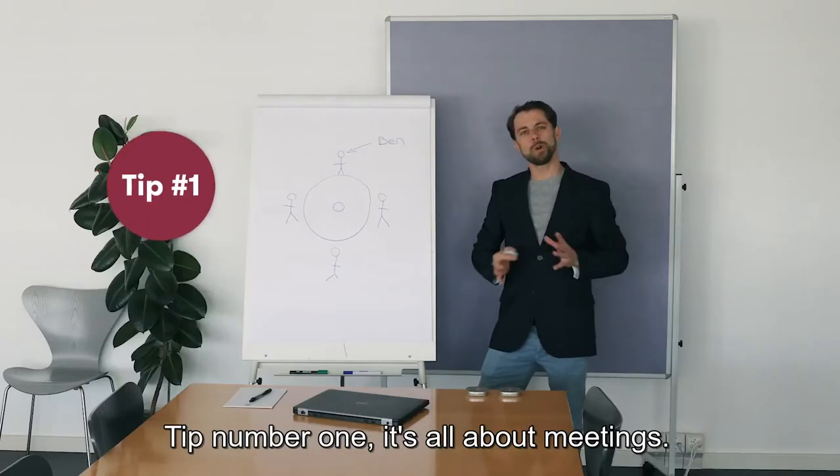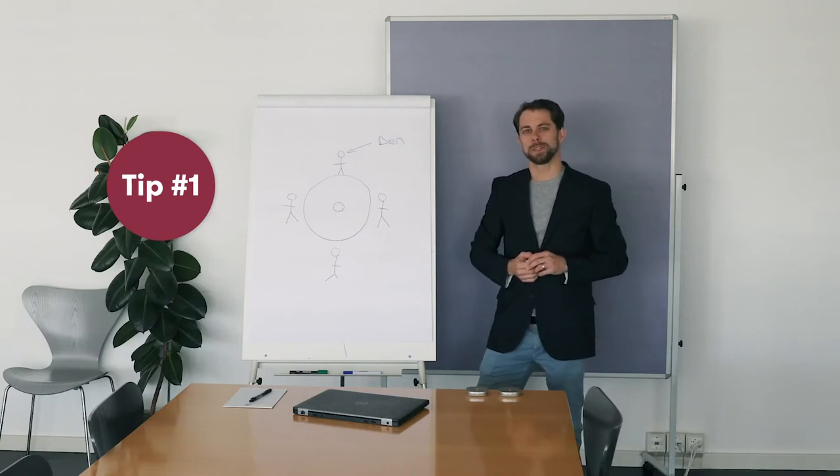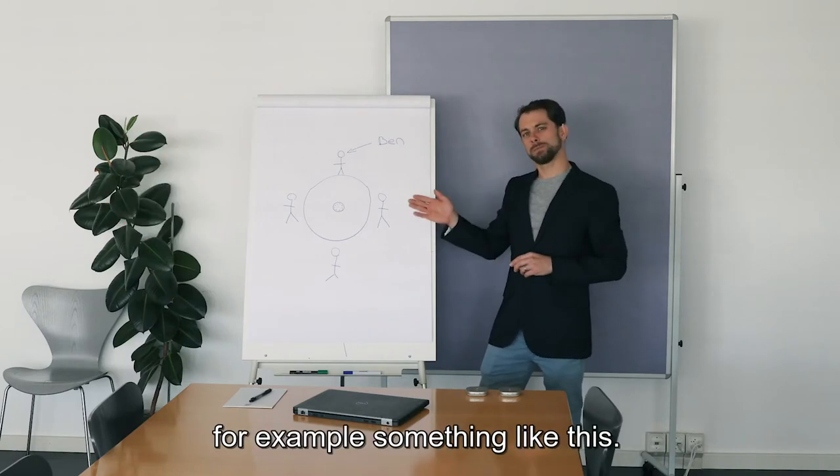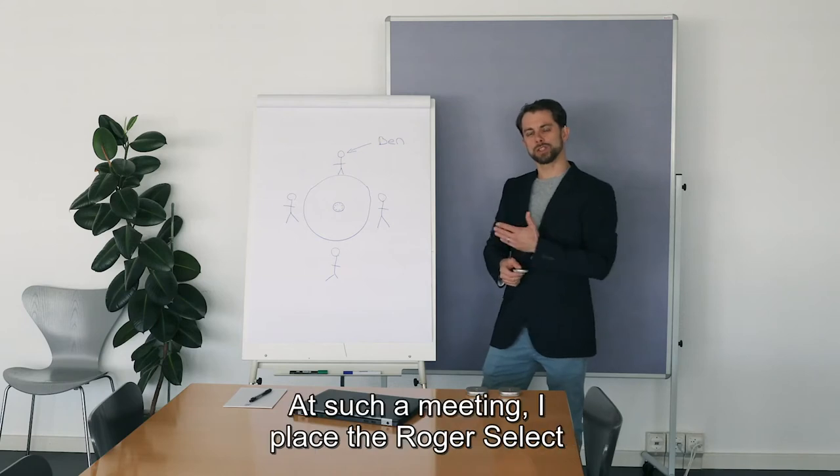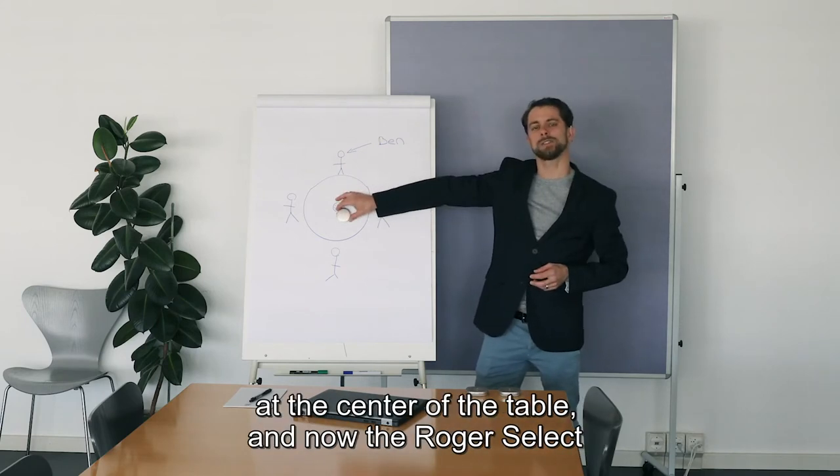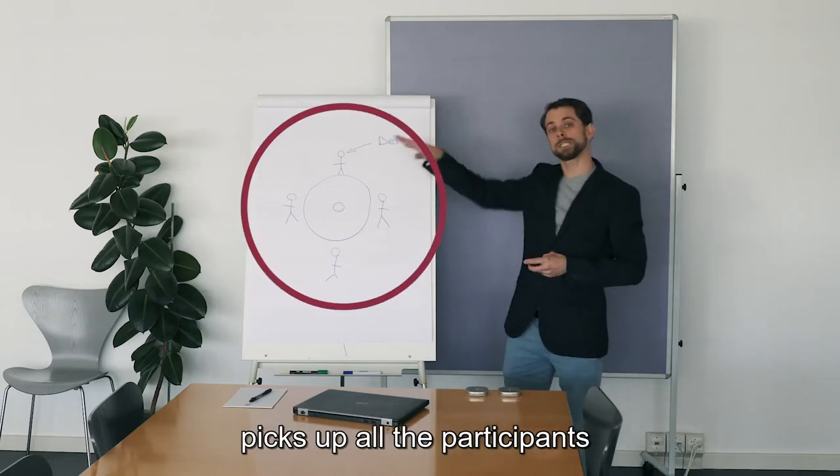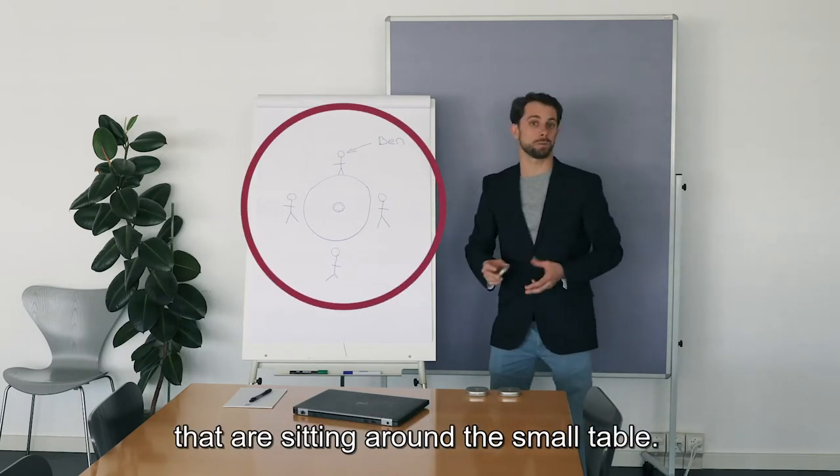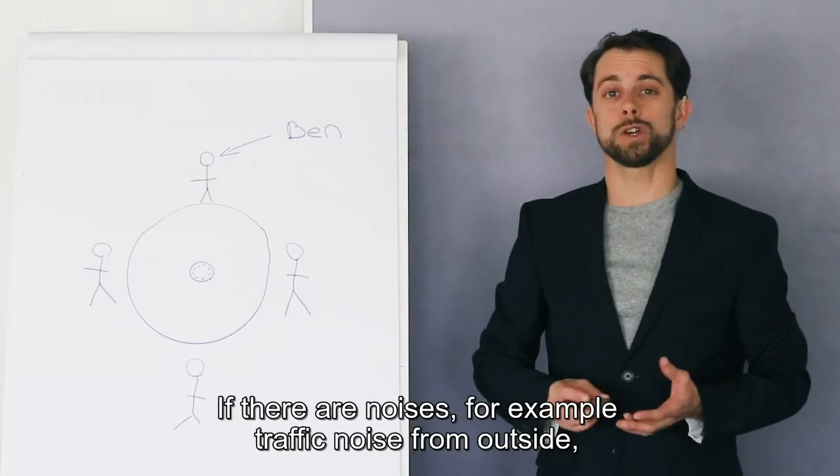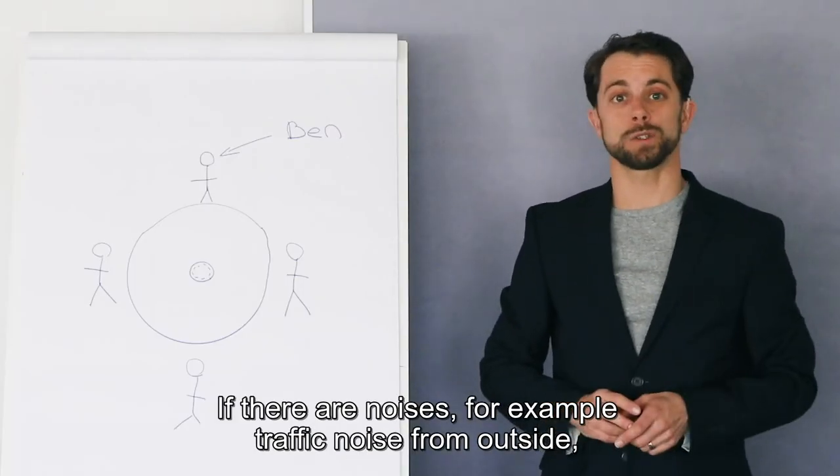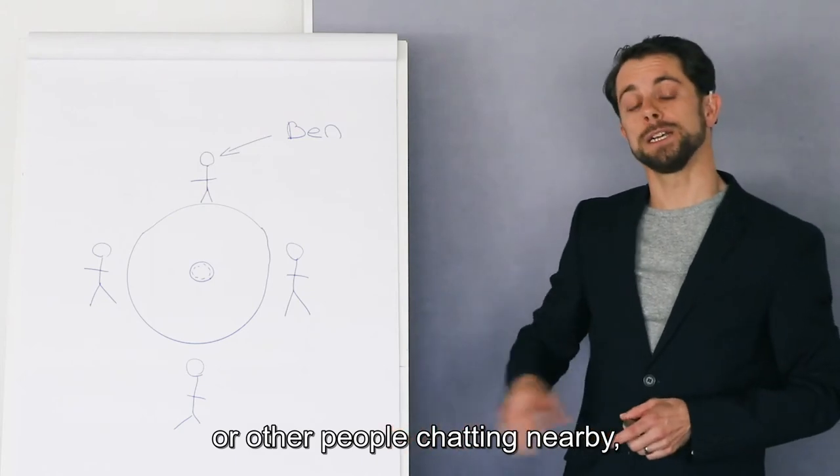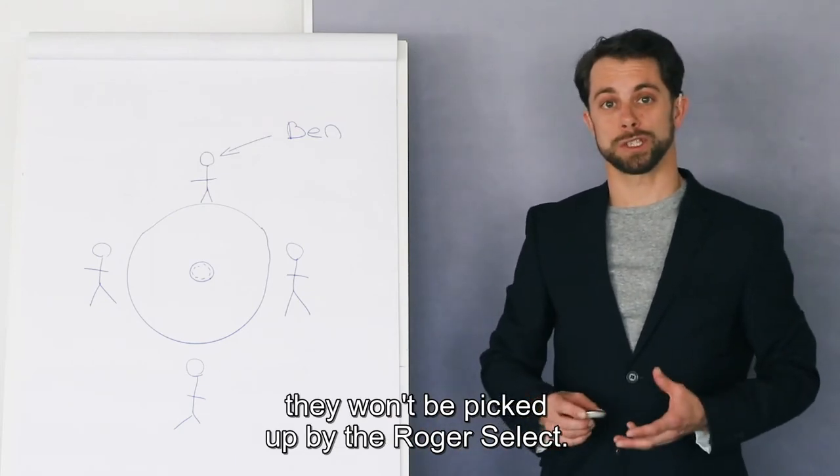Tip number one: it's all about meetings. Let's start with a small one, for example something like this. At such a meeting, I place the Roger Select in the center of the table. Now, the Roger Select picks up all the participants sitting around this small table. If there are noises, for example traffic noise from outside or other people chatting nearby, they won't be picked up by the Roger Select.